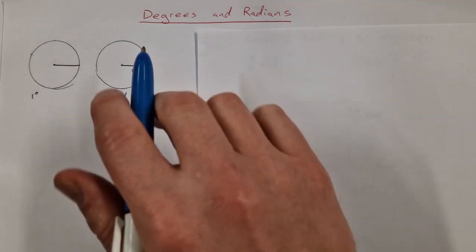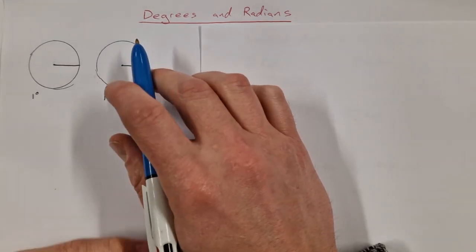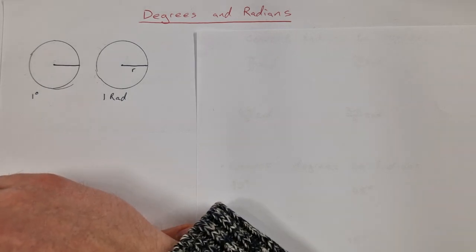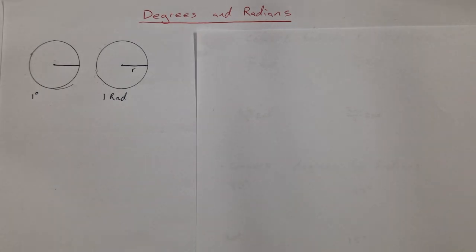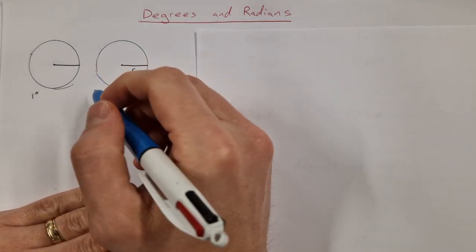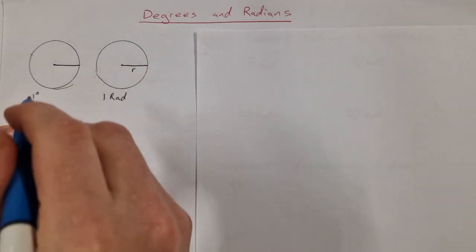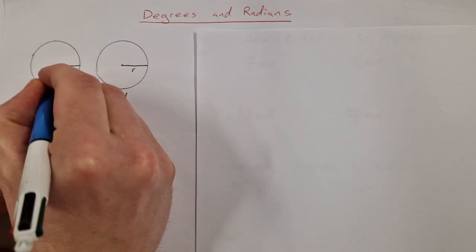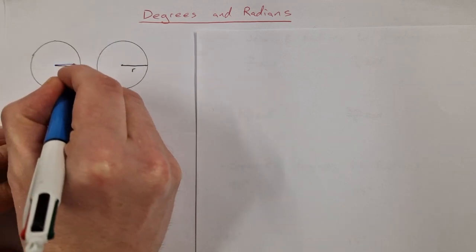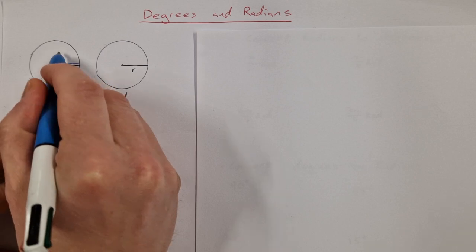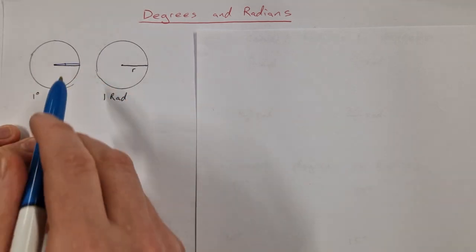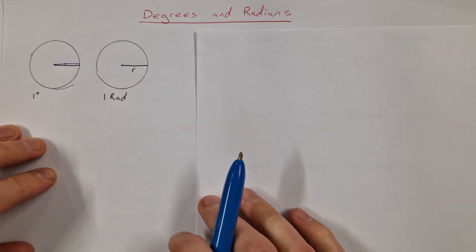In this video we're going to take a look at degrees and radians, specifically changing from degrees to radians and changing from radians to degrees. One degree is a very small measure of an angle — it's 1/360th of a circle, so a very, very small angle.